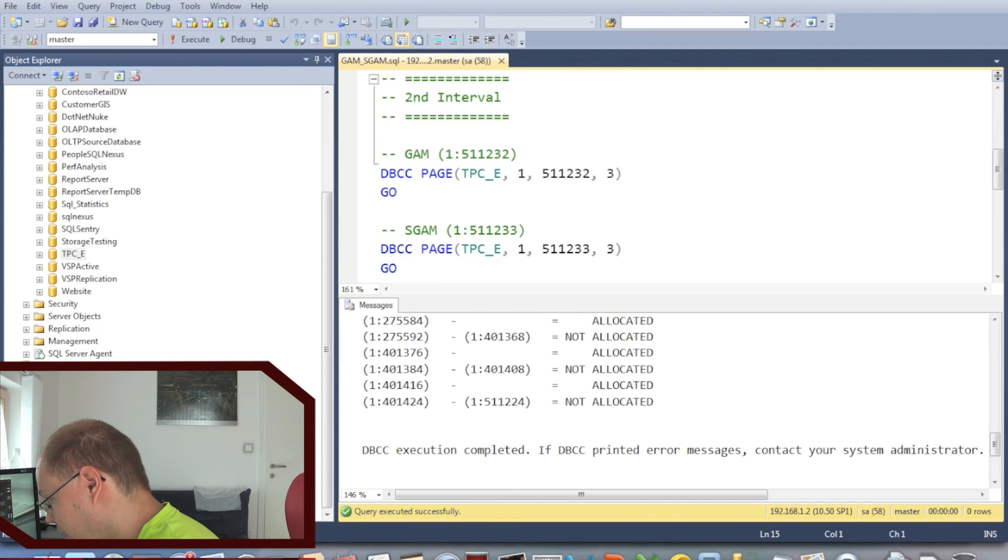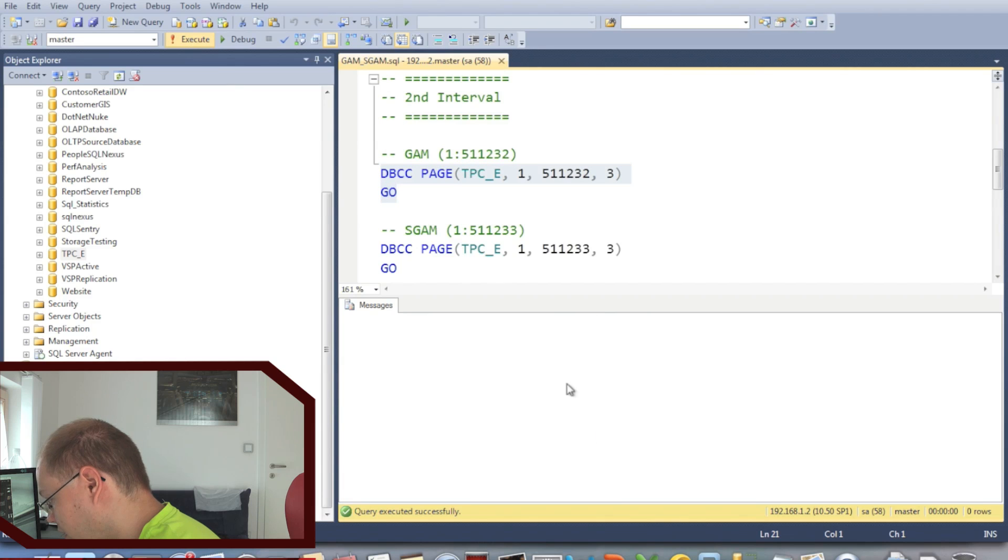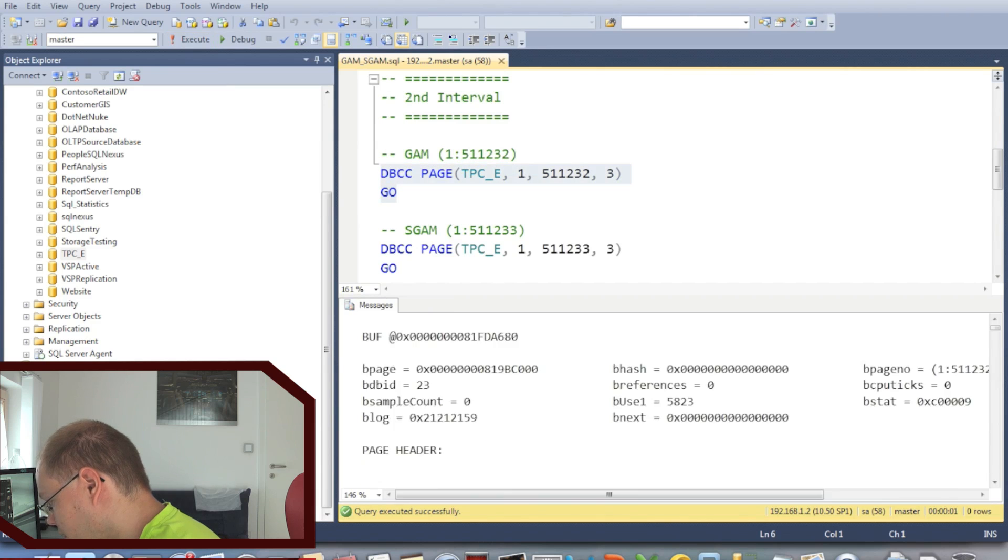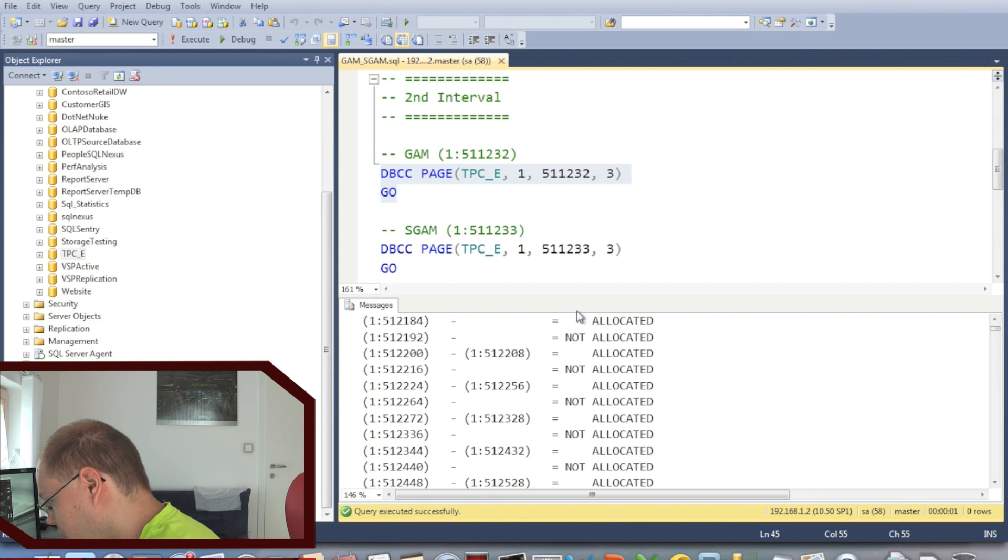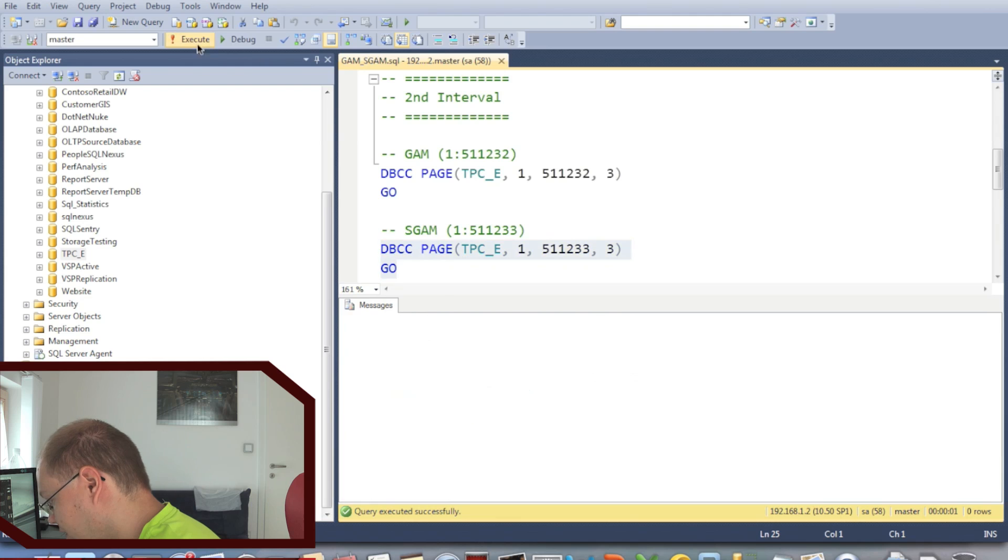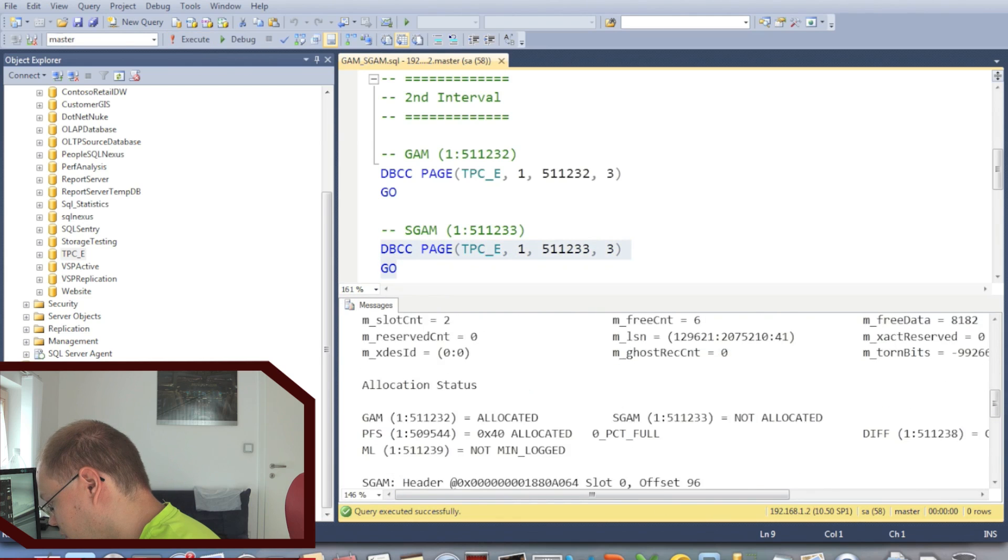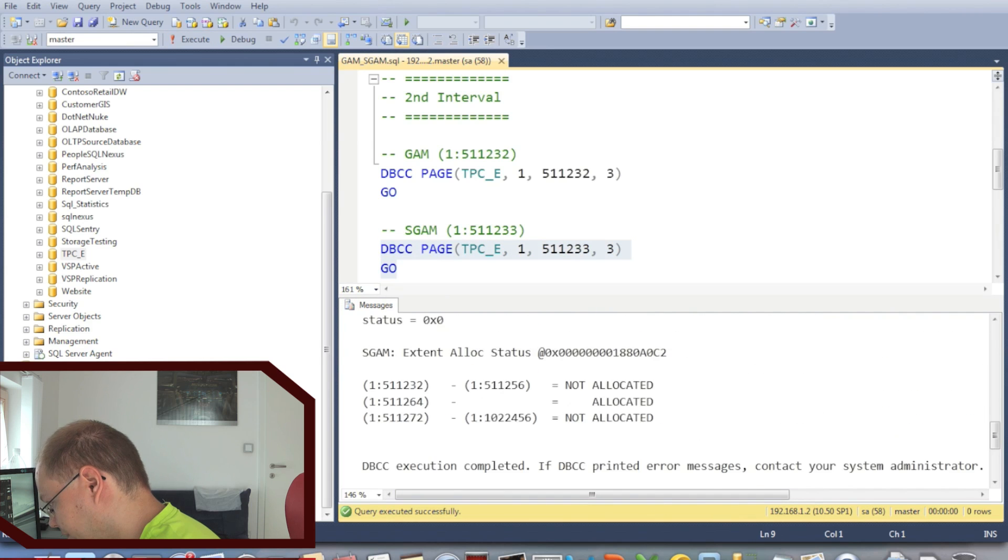Then, after 511,230 pages, you find the second GAM page. So again, I can dump out that second GAM page. As you can see here, the same bitmap mask, just with different page numbers, and the same with the SGAM page. Okay, so as you can see here, it's very very easy to dump out and analyze those GAM and SGAM pages through the DBCC page command.